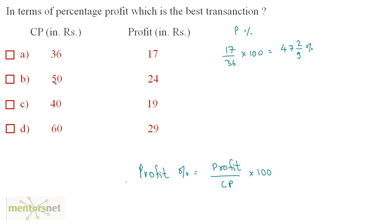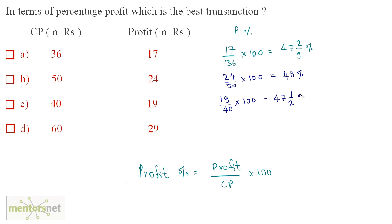Next, the cost price is 50 and profit is 24. So 24 upon 50 times 100, which equals 48%. Next, profit is 19 on cost price 40. So 19 upon 40 times 100, which comes out as 47.5% profit. The last option is 29 profit upon cost price 60 times 100, which equals 48 1/3 percent.